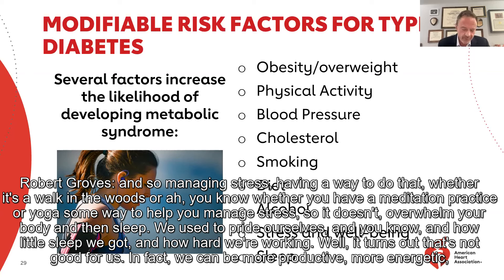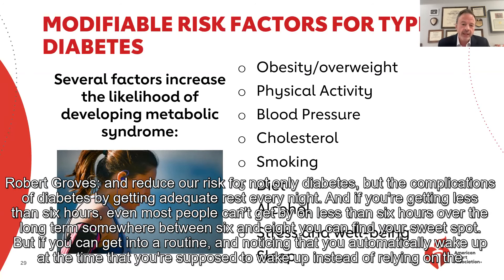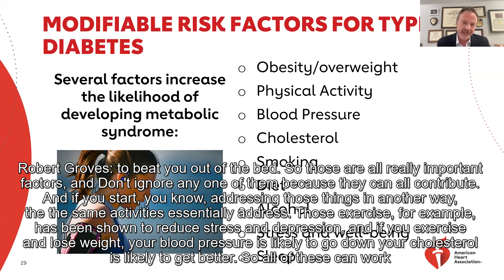And then sleep — we used to pride ourselves on how little sleep we got and how hard we're working. It turns out that's not good for us. We can be more productive, more energetic, and reduce our risk for not only diabetes but the complications of diabetes by getting adequate rest every night. If you're getting less than six hours — most people can't get by on less than six hours over the long term. Somewhere between six and eight hours, you can find your sweet spot if you can get into a routine, noticing that you automatically wake up at the right time instead of relying on the alarm. So those are all really important factors — don't ignore any one of them because they can all contribute.